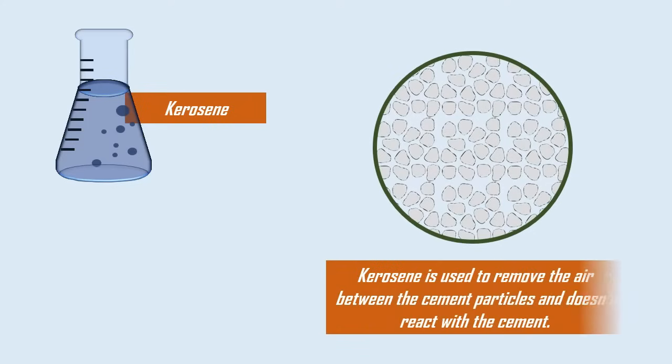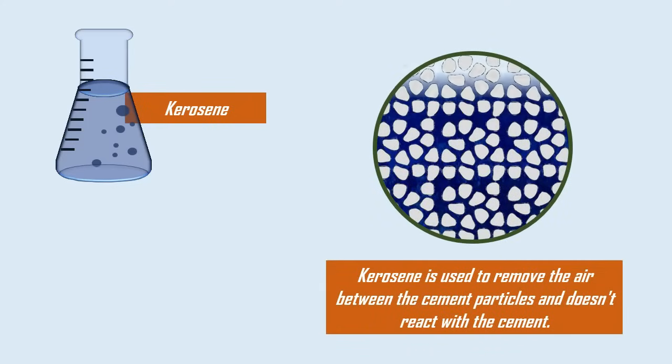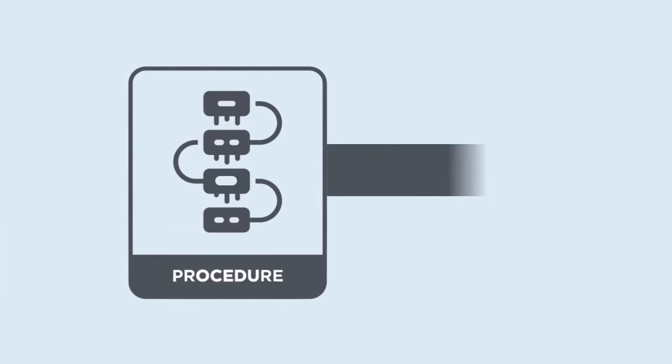Here, the kerosene is used to remove the air between the cement particles, as it doesn't react with the cement. Let us now proceed to the procedure for performing a specific gravity test on cement.